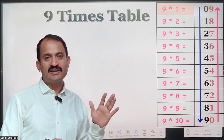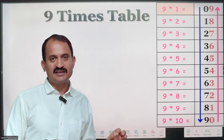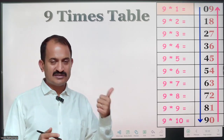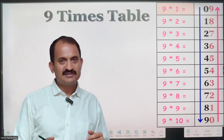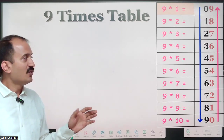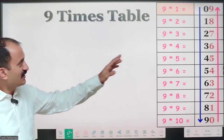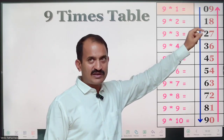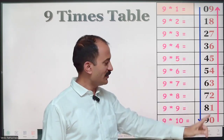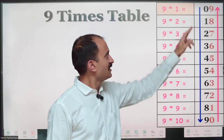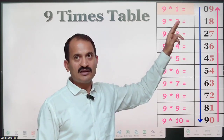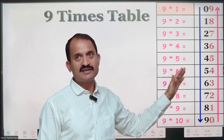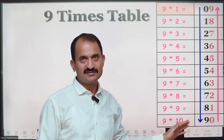You can form the 9 times table very easily. There are two places: the units place and the tens place. For the tens place, you can start with 0 and go up to 9: 0, 1, 2, 3, 4, 5, 6, 7, 8, 9.